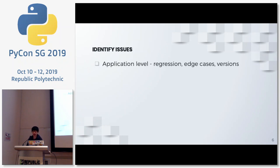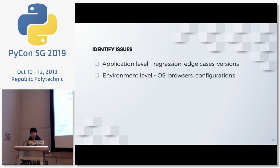So now you start to have an idea of what is actually wrong. It can be on the application level — a regression error, something that worked before but doesn't anymore, or an edge case where the user is using your application in ways you never expected. They may be running a very old version. On the environment level, they may have a different OS or browser. It can also be configurations, more applicable for server-side applications, where a firewall blocks everything.